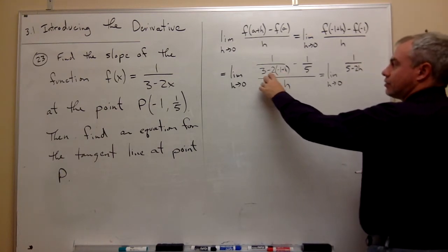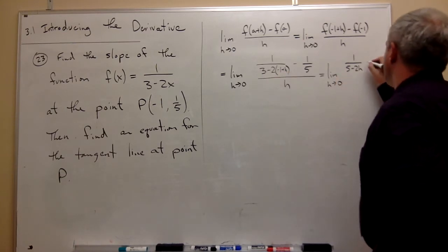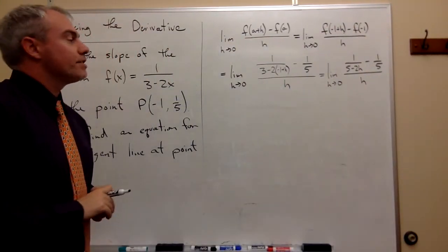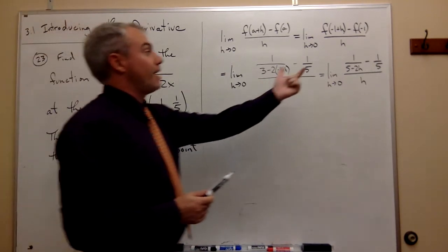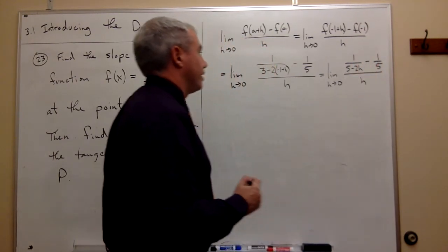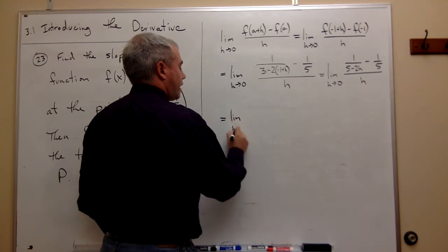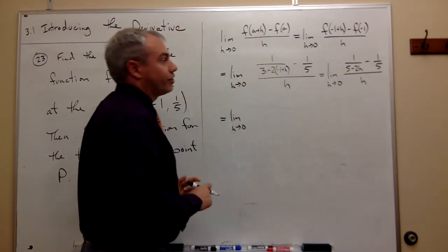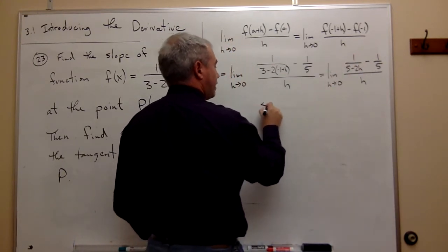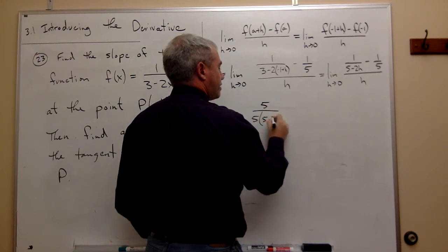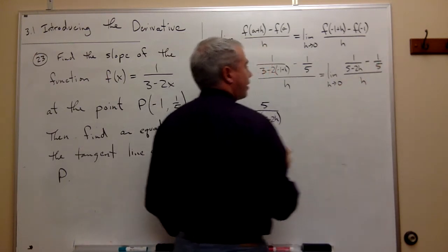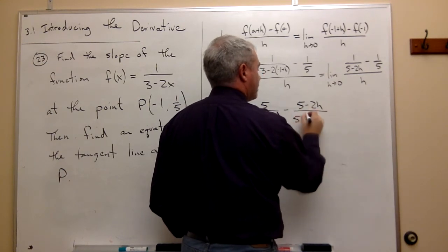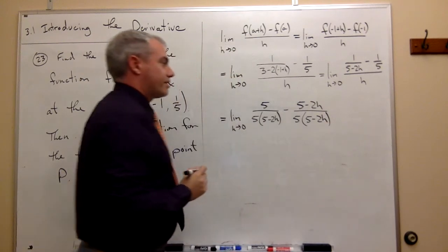I distributed that minus 2 and get plus 2 and a minus 2h, giving minus 1 fifth divided by h. The next thing we should do is get a common denominator and put these two fractions in the numerator together into one fraction. The common denominator would be 5 times the quantity 5 minus 2h. Multiplying top and bottom of the first term by 5 gives 5 over 5 times 5 minus 2h, and multiplying the second term by 5 minus 2h gives minus the quantity 5 minus 2h over 5 times 5 minus 2h.